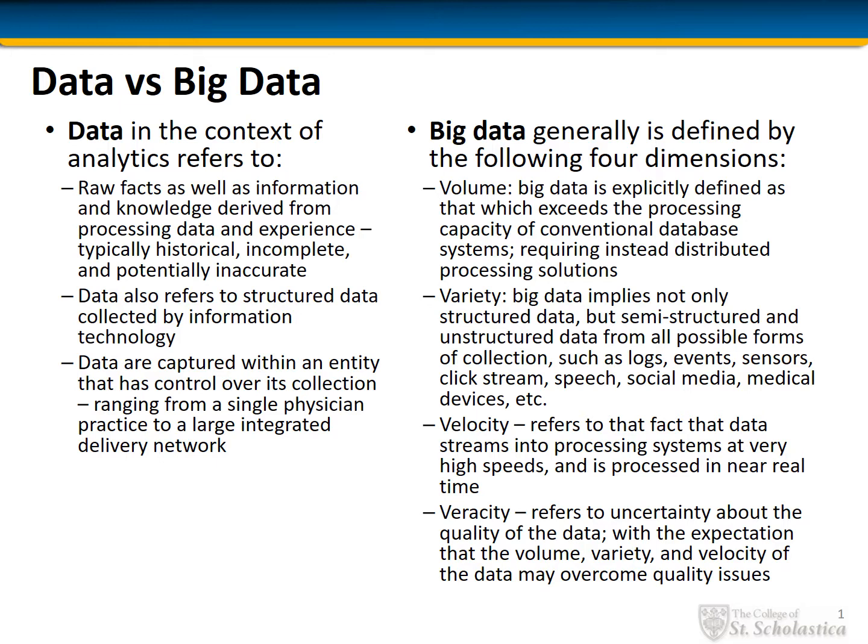The next V is variety. Big data implies not only structured data, but semi-structured and unstructured data from all possible forms of collection, such as logs, events, sensors, clickstream, speech, social media, medical devices, etc.